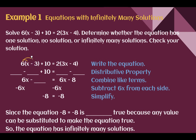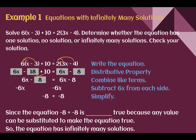6 times x is 6x. 6 times 3 is 18, so I'd end up with 6x minus 18. Bring down the 10. On the other side, 2 times 3x is 6x, and 2 times 4 is 8, so 6x minus 8. Next, I can combine like terms. I see two constant terms on the left — negative 18 plus 10 is negative 8. Now I have my equation with a variable on both sides: 6x minus 8 equals 6x minus 8.